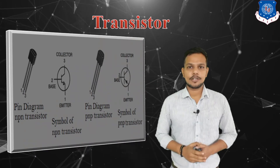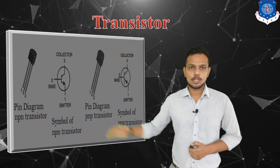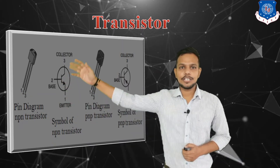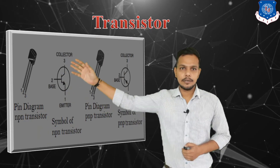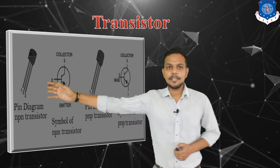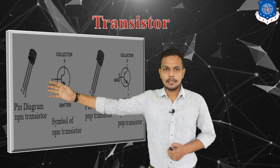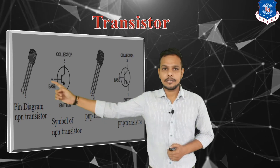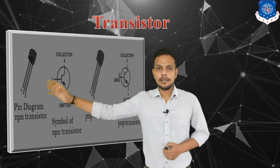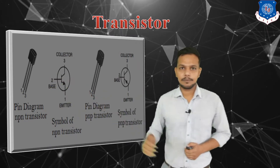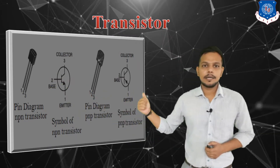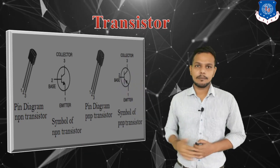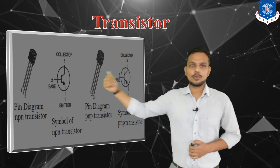Here we can see there are two different types of transistor: one is NPN transistor and another one is PNP transistor. This is the symbol of NPN transistor, which has three terminals — emitter, base, and collector. Here we can see in the pin diagram there are three terminals: one is emitter, in between emitter and collector is base. This is the symbol with pin diagram. Here we can also see the PNP transistor along with its symbol and pin diagram.